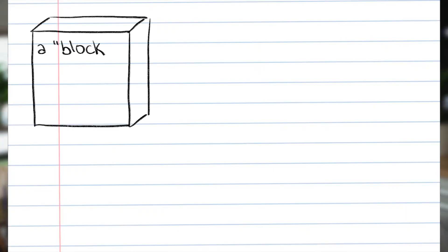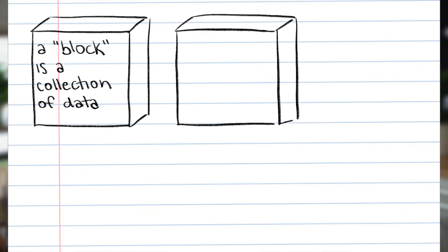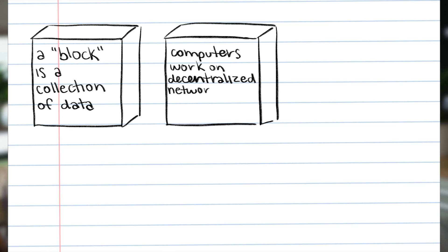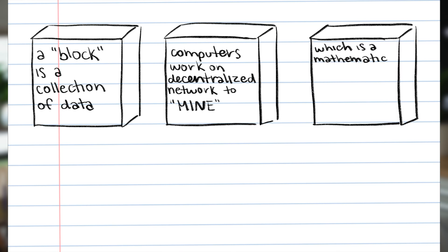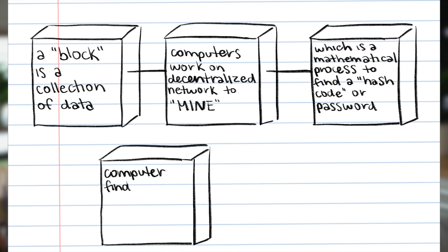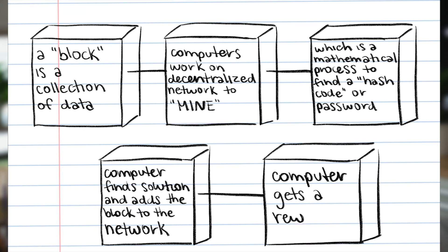For example, if a hacker was trying to tamper with the blockchain, they couldn't just hack one computer on the server — they would need to get into every single computer. So to recap: a block is a record of data. Computers work on a decentralized network to find the hash, or the password, to that block. When a computer finds the right solution, that block is added to the network and that computer receives a reward. After that block is added to the chain, its hash is used to calculate that of the next block, which creates a chain of data that cannot be changed. And that is what blockchain technology is.